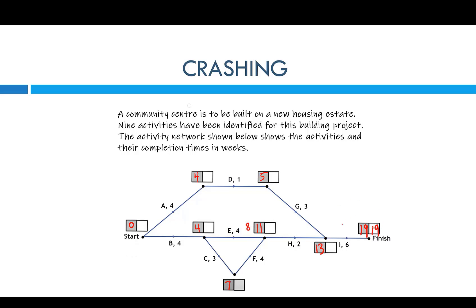Nineteen minus six gives me thirteen. Thirteen minus three gives me ten. Ten minus one gives me nine. Then nine minus four gives me five, but going backwards we've got to get the smallest way back. Now at thirteen minus two gives me eleven. Eleven minus four gives me seven. Eleven minus four that way also gives me seven, but seven minus three gives me four. So I've got seven there but I've got to put four in because I'm going the shortest way backwards. Then four minus four is zero. See how you had five before, but we want the smallest way to get back, and that's zero.